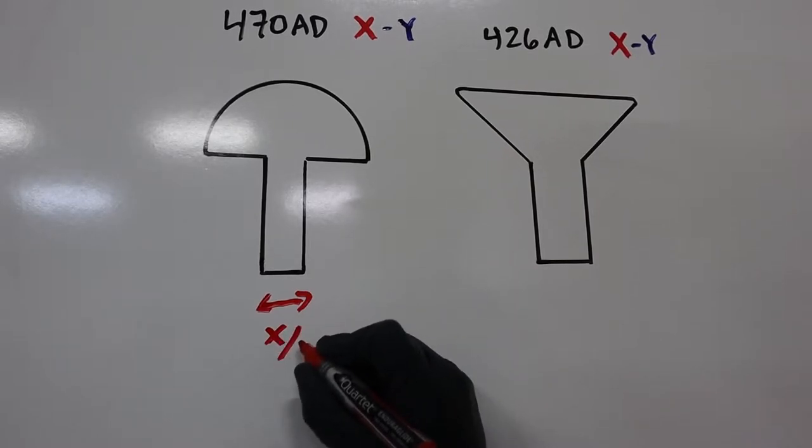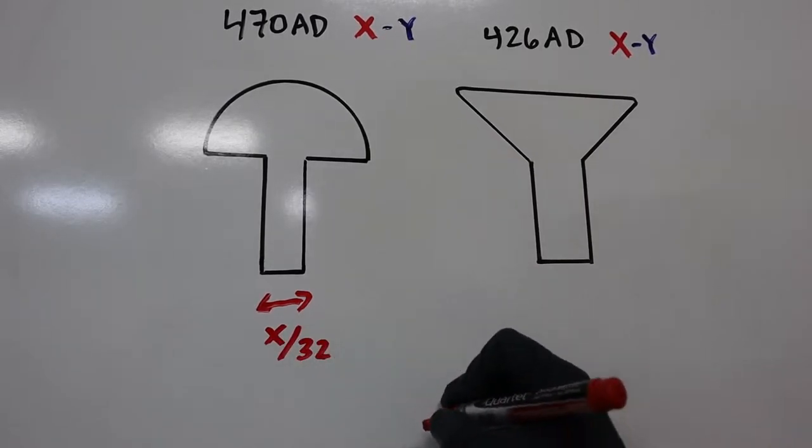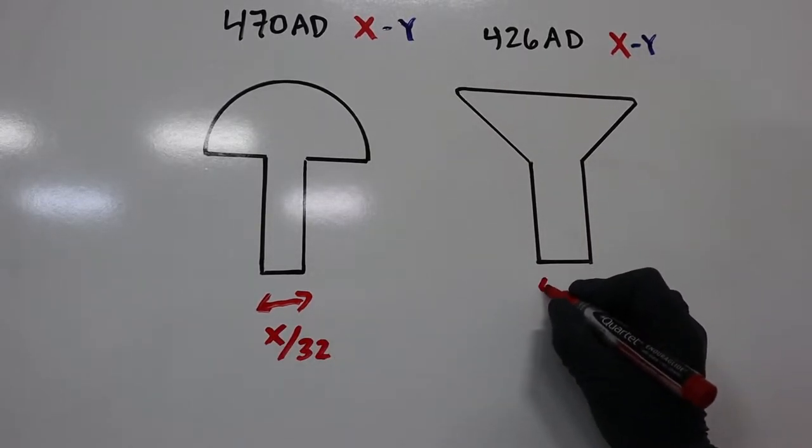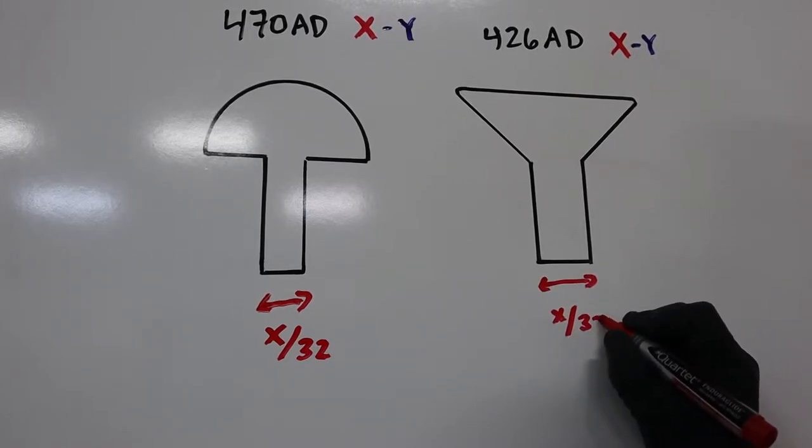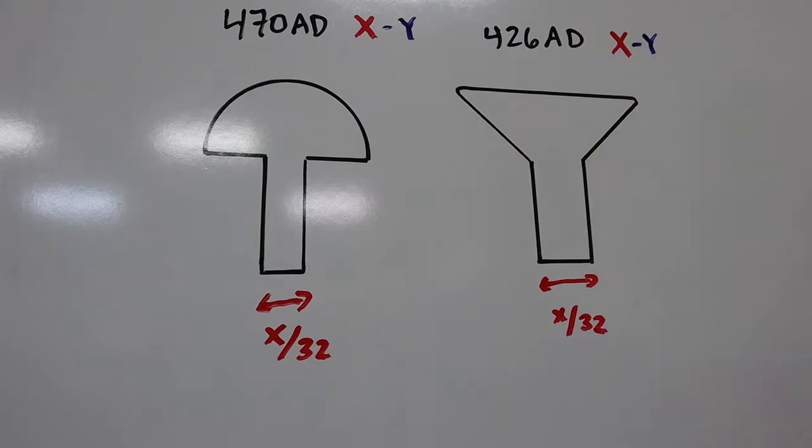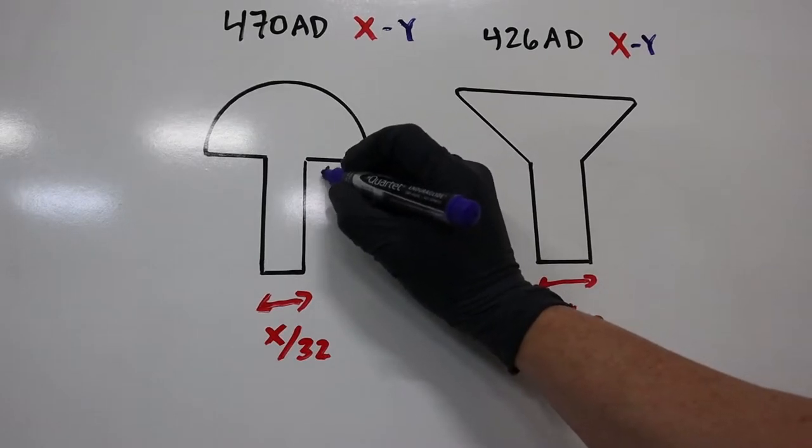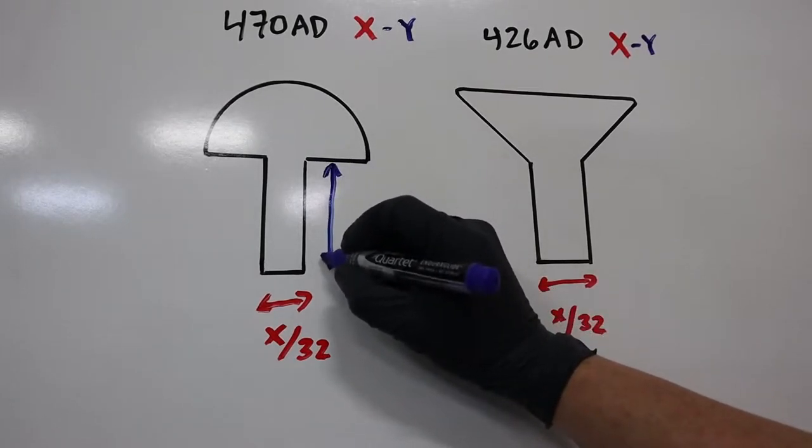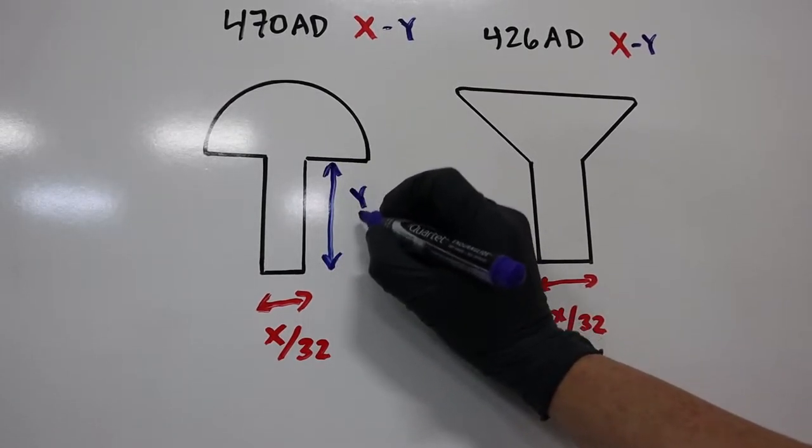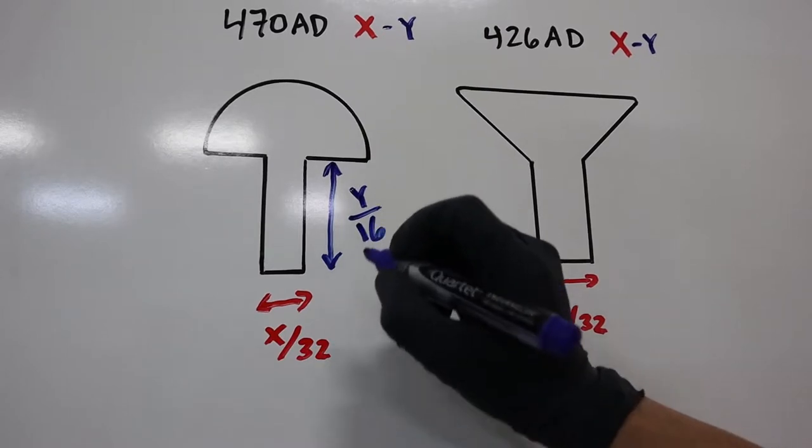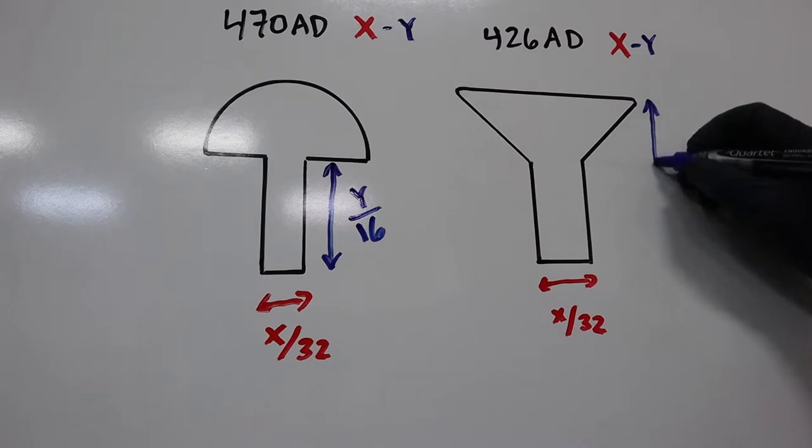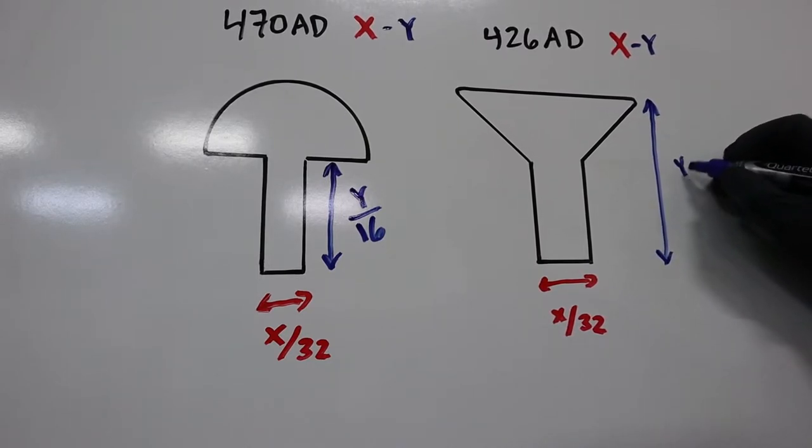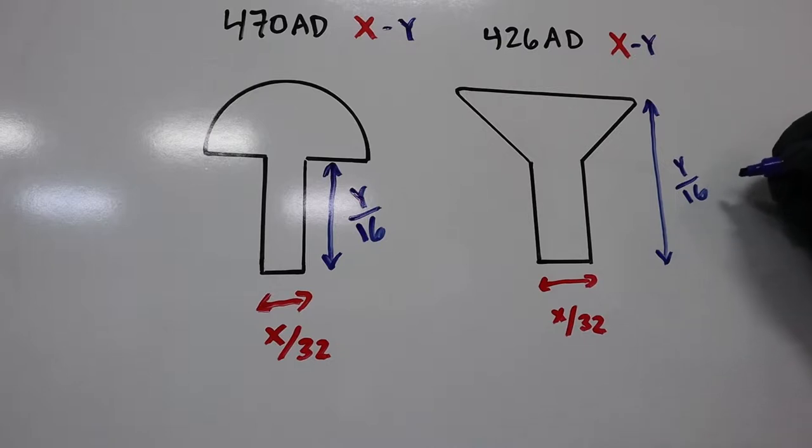So if we look at how they're labeled for the domed head ones, or the universal head and the flush head ones, you have the diameter in 32nds of an inch and most of the ones that you're going to deal with are 32nds and 8th inch. And for the height of the rivet, for the universal head, the height is going to be measured from the bottom of the domed head in 16th of an inch. But for a flush head rivet, the length is indicated right from the top all the way to the bottom of the rivet in 16th of an inch again.